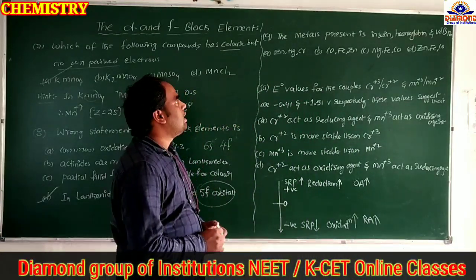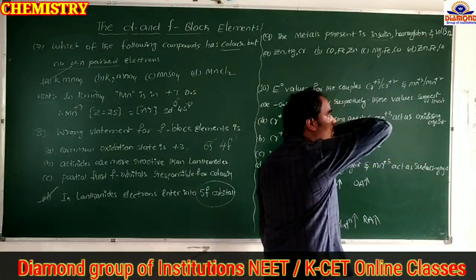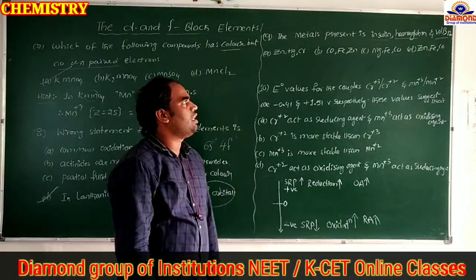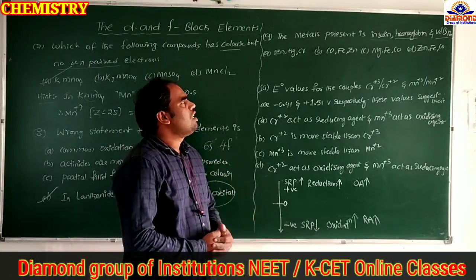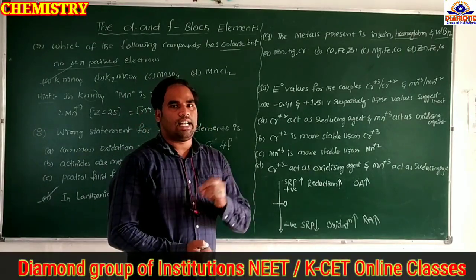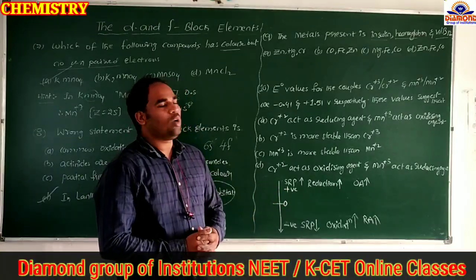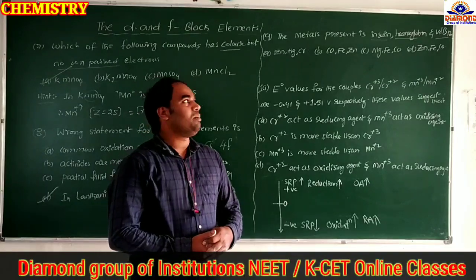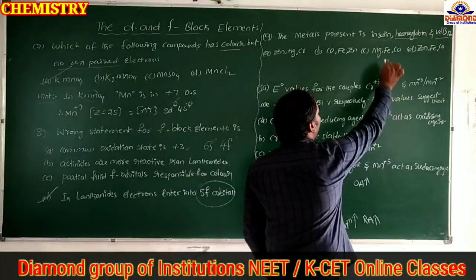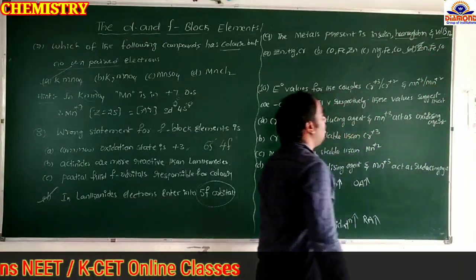Question 9: What are the central metals present in insulin, hemoglobin, and vitamin B12? Insulin contains zinc as the central element. Hemoglobin (present in blood) contains iron as the central element. Vitamin B12, also called cyanocobalamin, contains cobalt as the central element. Therefore the answer is zinc (insulin), iron (hemoglobin), cobalt (vitamin B12) — option D is correct.